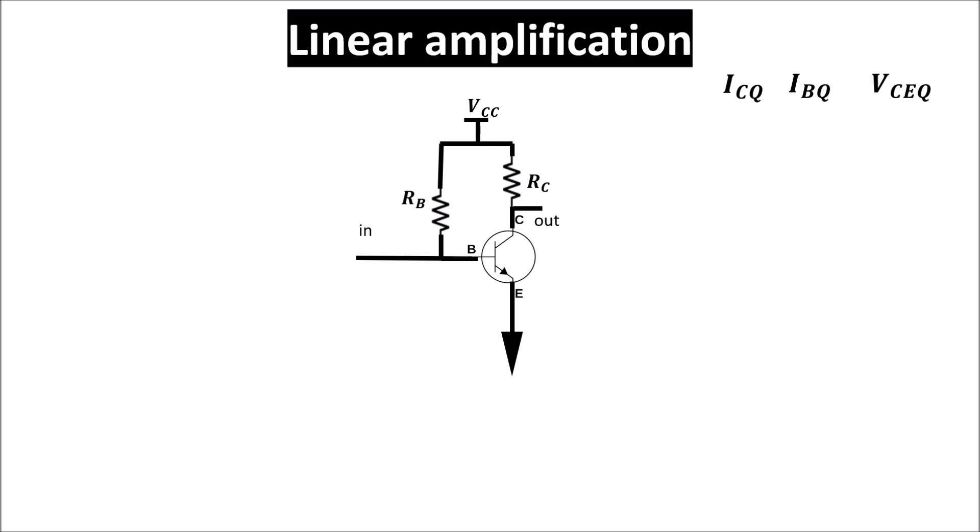Once biased, the circuit can work so an input signal can be amplified. So let's say we apply an AC input signal VI at low frequency which is superimposed to our DC voltages and currents already known from our previous biasing.